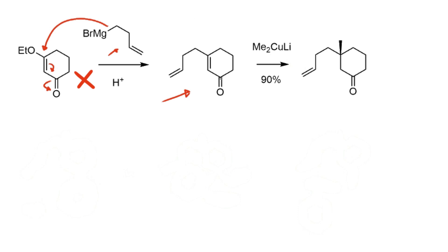Once we have obtained this functionalized cyclohexanone ring with the side chain appended, the next step is the addition of a cuprate reagent. These copper-lithium species prefer to add in a conjugate sense, so effectively methyl minus adds at this position and sets up the quaternary center.